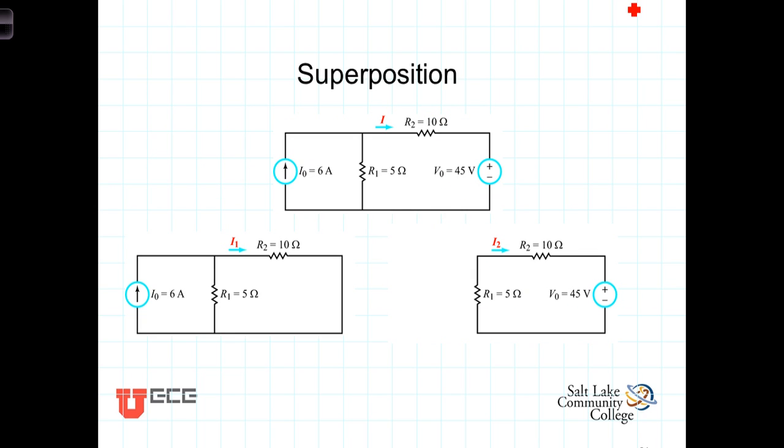Here we have a linear circuit consisting of two sources, and it's important to understand it's independent sources, two independent sources. Here we have a current source of six amps, and over here we have a voltage source of 45 volts.